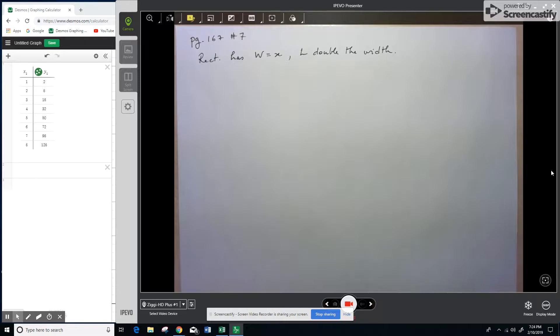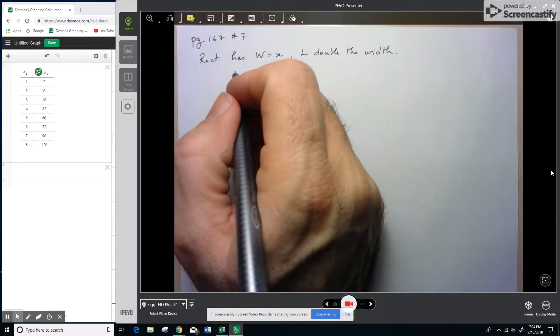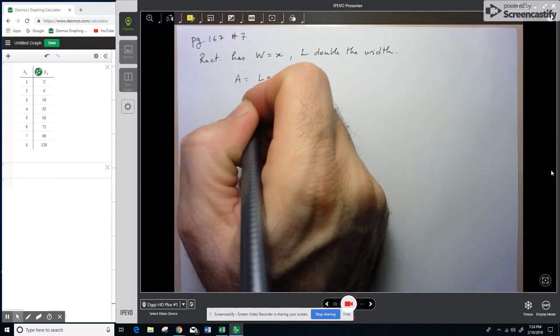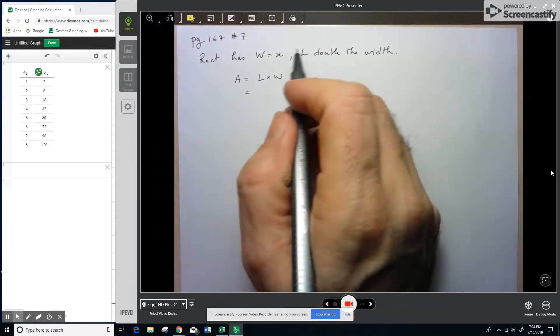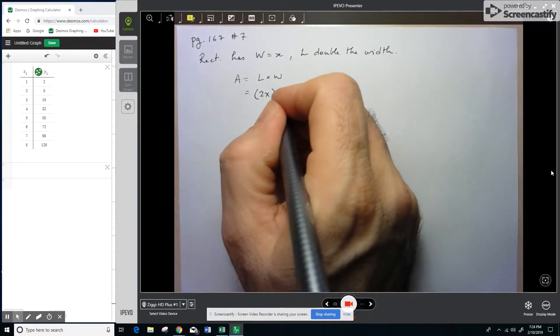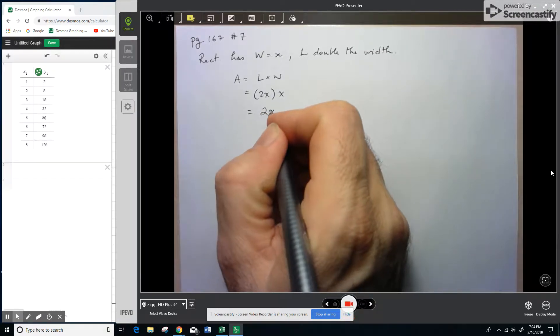Okay, so they want us to create a table of values, which I'll look at in a second. But I think it might also be worth just coming up with an equation for the area. So remember that the area is just equal to the length times the width for a rectangle. What we have is the length is double the width. So if the width is x, this is 2x, and the width is just x. And of course 2x times x is just 2x squared.